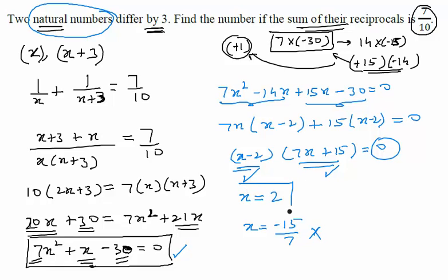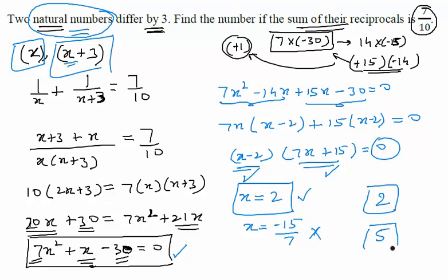But 2 looks fine. 2 is a natural number. So one of my natural numbers, according to my assumption, is x and value of x is equal to 2. So one of the numbers should be 2. Other number is x plus 3. So if x is equal to 2, my other number should become equal to 5. So 2 and 5 are the two numbers which on adding their reciprocals give us 7 by 10.